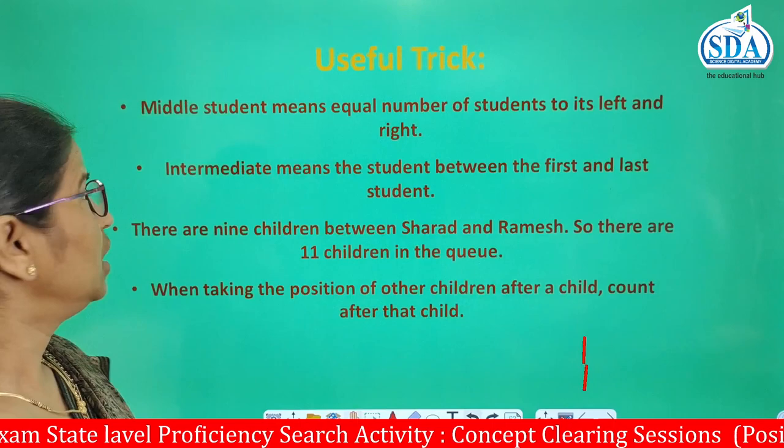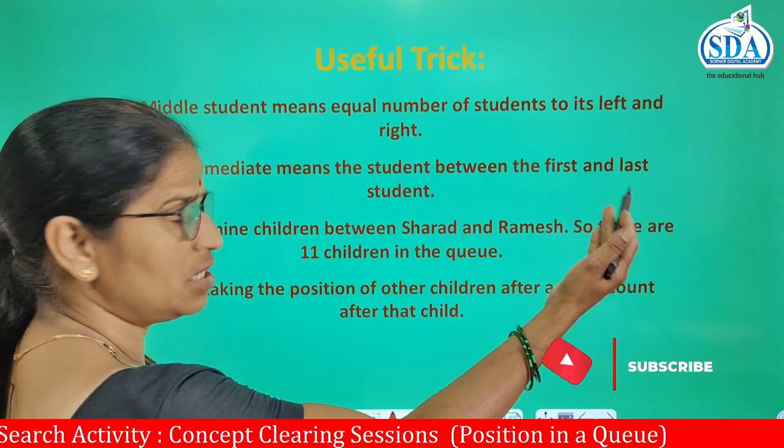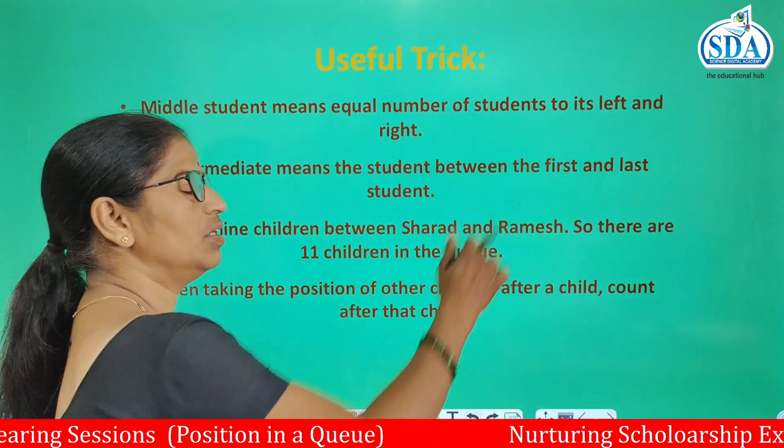The middle student means an equal number to both sides — left and right. Intermediate means the student positioned between the first and the last.